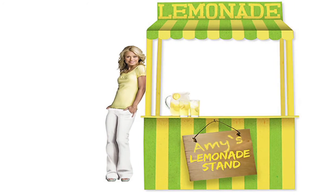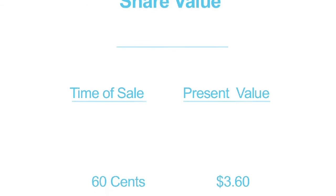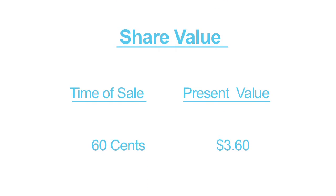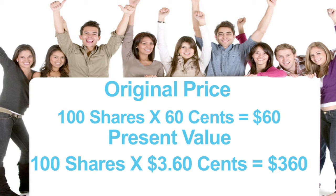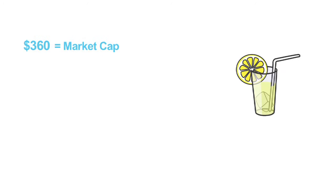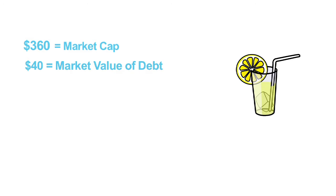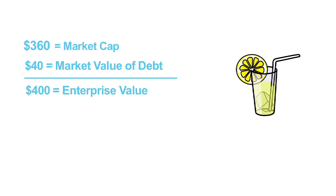Amy does a great job and her lemonade stand takes off. It does so well that shares now trade at $3.60 per share. In other words, the market values the equity at $360 — we call this the market cap. Because Amy has a good credit standing, the book value of debt equals the market value of debt. The enterprise value of a company is its market cap plus its market debt, so the enterprise value of Amy's lemonade stand is $360 plus $40, which is $400.